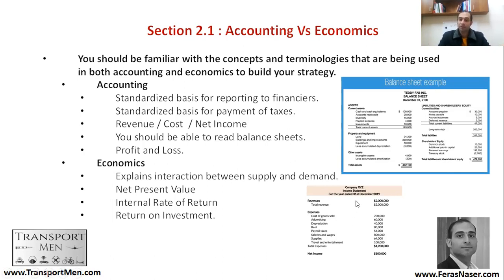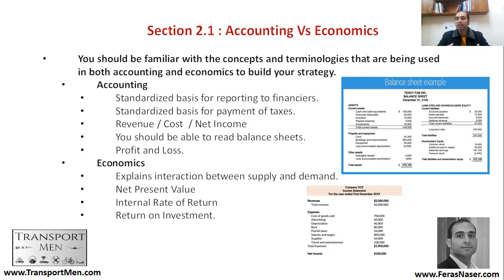Looking at the income statement: you think about revenues and expenses. For example, you have $2 million in revenue, but you have cost of goods sold, advertising, depreciation, rent, payroll, and taxes — and you end up with net income or net loss. As an organization CEO, these are the ABCs of demonstrating statements to investors. We are talking about established companies, which should have proper balance sheets and proper income statements in place.